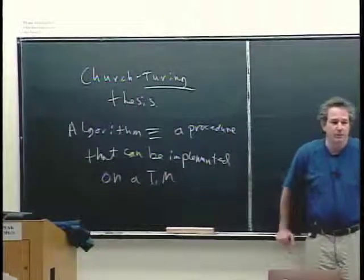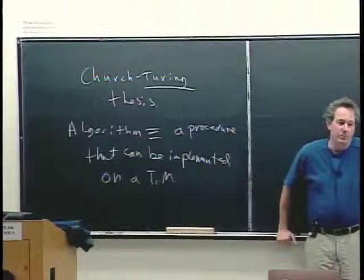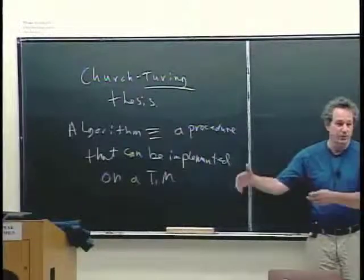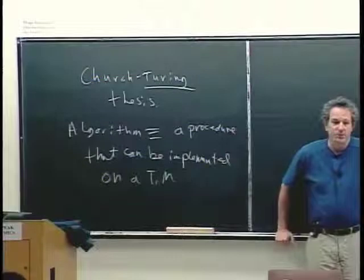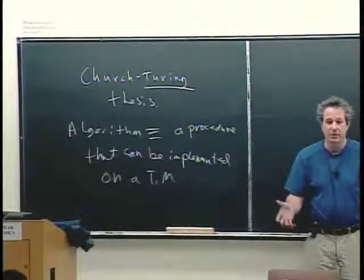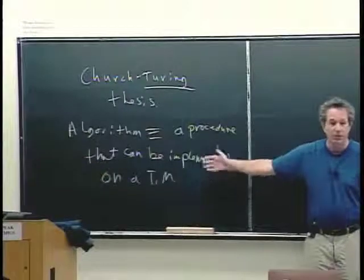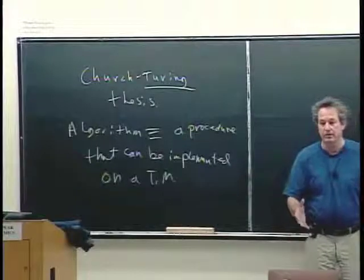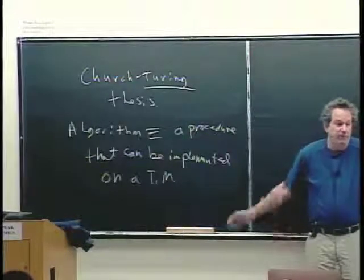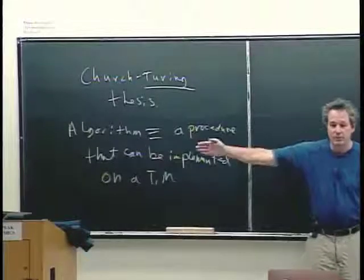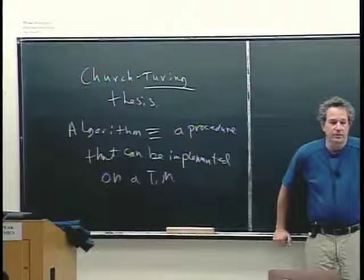We've done a little bit of this where we said, what if we have multiple tapes? Multiple heads? Maybe there's some language recognizable by a Turing machine with additional powers. All of those embellishments — multiple heads, multiple tapes, multiple dimensions — have all been shown to be equivalent to just the plain vanilla Turing machine: one head, a unidirectional infinite tape, and finite control with the kinds of transitions Turing machines have.